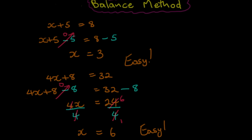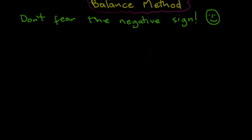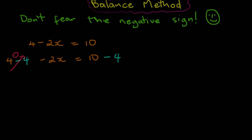Now we're going to move on to some problems that have the dreaded negative sign. I know many of us hate negative signs — I remember back in the day, if a teacher gave me a problem with a negative sign, I used to literally shut down. But there's no need for that. Let's say we have 4 minus 2x is equal to 10. We want x by itself, so I subtract 4 from both sides. 4 minus 4 is 0, so we're left with minus 2x is equal to 10 minus 4, which is 6.